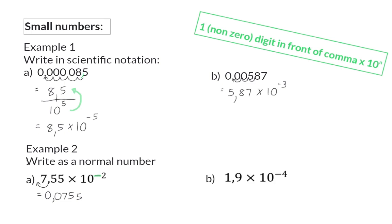In example B, we once again have a negative exponent, telling us to move the comma 4 spaces to the left to make the value smaller. If I write down 1,9, it means I have moved the comma 1 space to the left, and I still need to move it 3 extra spaces, which means I will add 3 zeros, so that I can put the comma in front of these 3 zeros. The comma will have to move 1, 2, 3, 4 spaces to the right again to rewrite it in scientific notation.